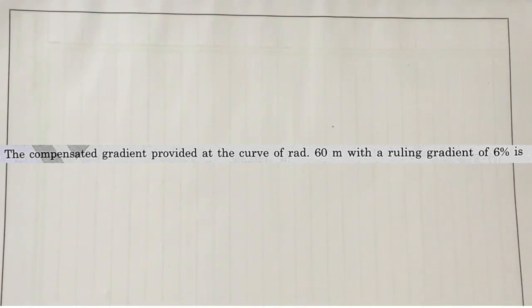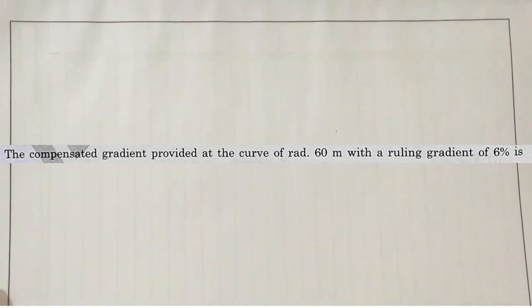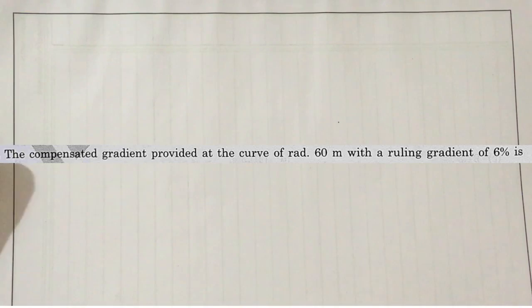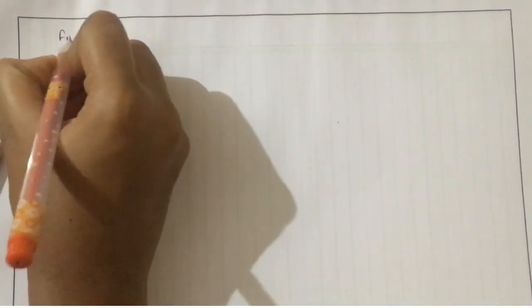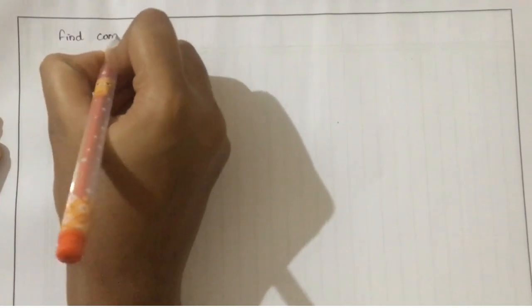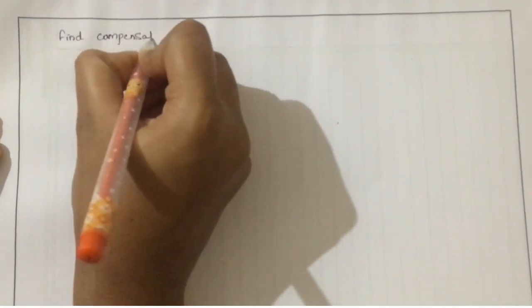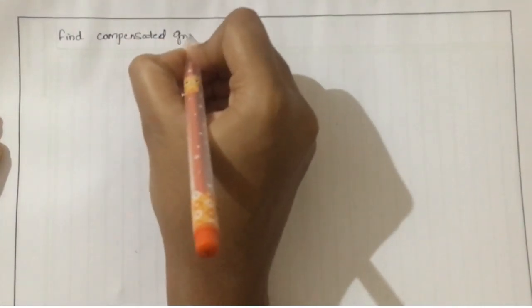In this video we are going to solve a problem about compensated gradient provided at a curve of radius 60 meter with a ruling gradient of 6 percent. In this problem we need to find the compensated gradient.